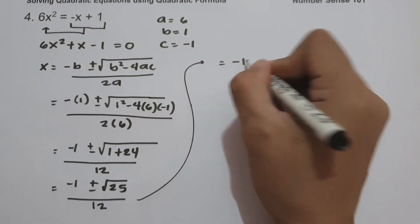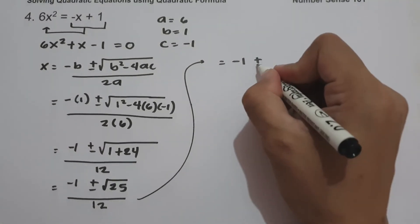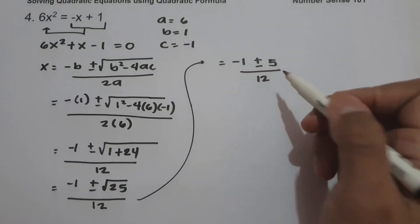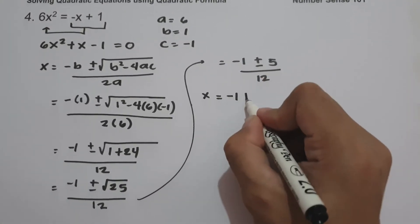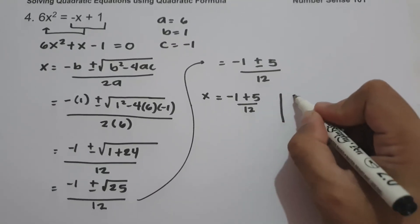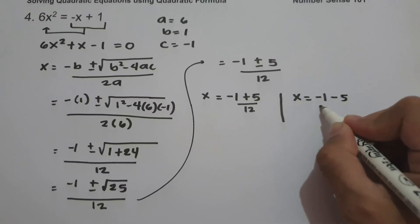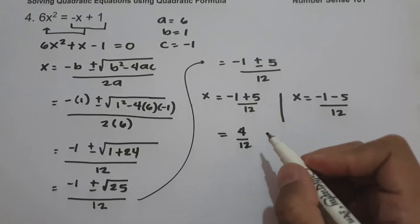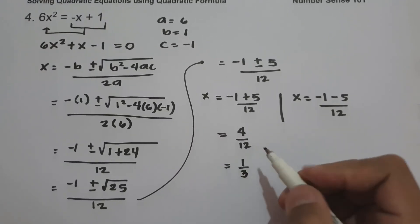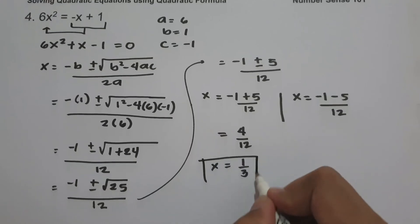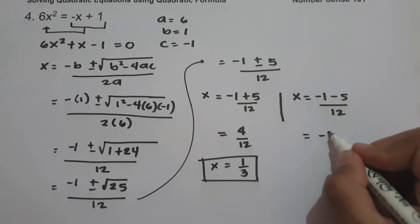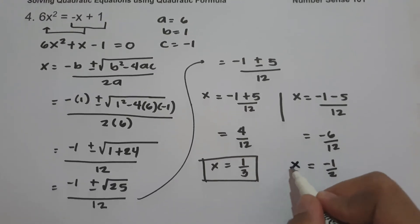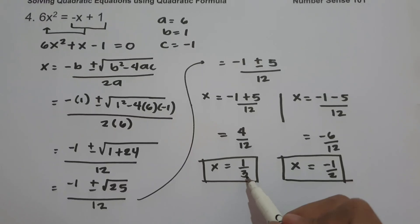We have negative 1, and the square root of 25 is positive and negative 5, all over 12. Since the value of square root of 25 is positive and negative 5, we are going to have two equations. x equals negative 1 plus 5 over 12 — that is 4 over 12, which can be written as 1 third, because they are divisible by 4. And x equals negative 1 minus 5 over 12 — that is negative 6 over 12, which can be written as negative 1 half, because the greatest common factor is 6. So the values of x are 1 third and negative 1 half.